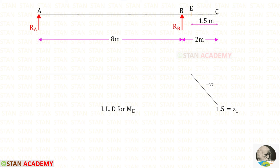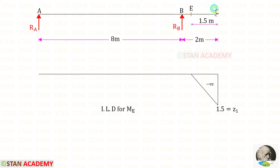Now let us draw the ILD for the bending moment at point E. From A to E it will be 0. At point C the ordinate will be minus Z1 — Z1 is 1.5, so it will be minus 1.5.